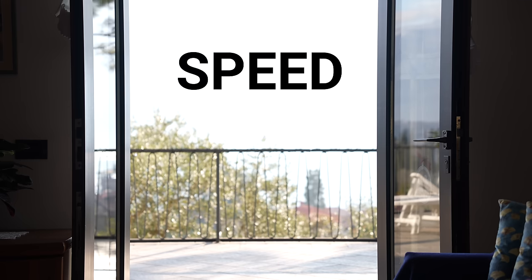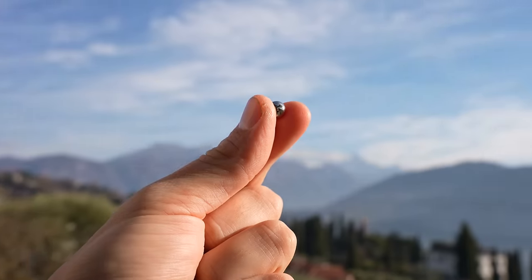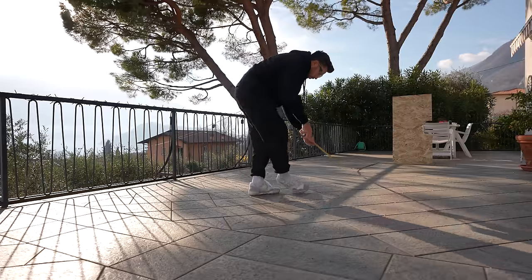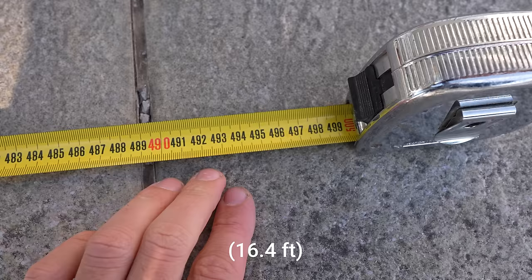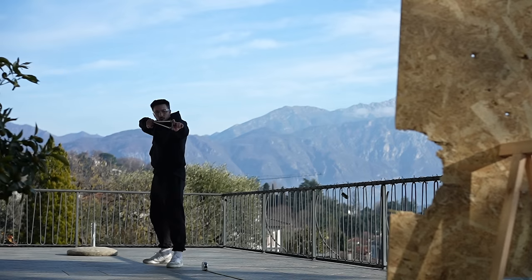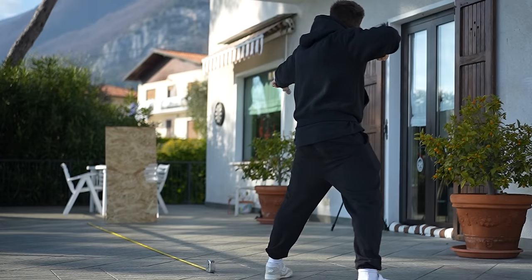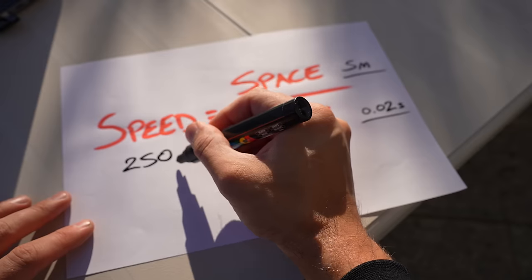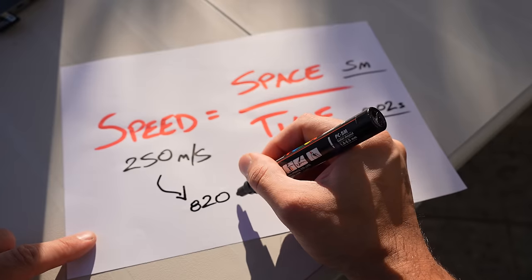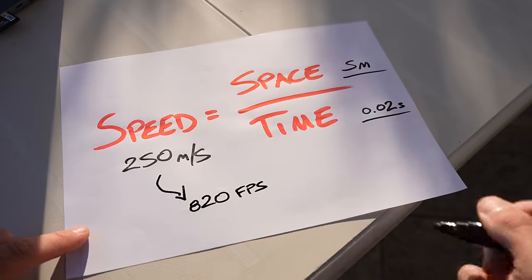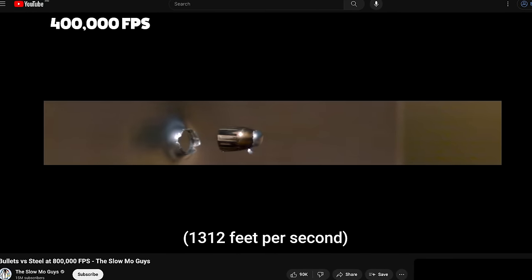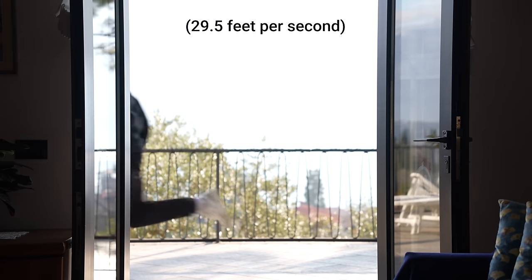Test number one, speed. I wanted to measure the speed of the steel ball flying in the air. I placed the target at exactly five meters from the slingshot. And by checking the time it took the steel ball to reach the target, I could calculate the speed of the ball. With this test, I got 250 meters a second, or 820 feet per second, which is really fast. For comparison, a 9 millimeter bullet travels at around 400 meters a second. And I travel at 9 meters a second.